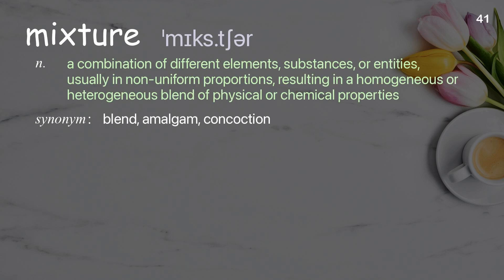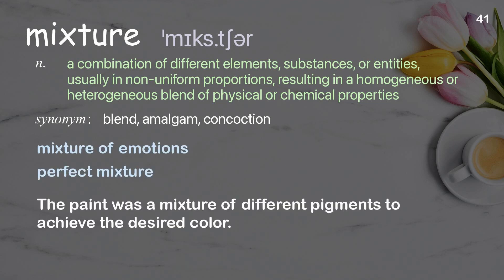Mixture: a combination of different elements, substances, or entities, usually in non-uniform proportions, resulting in a homogeneous or heterogeneous blend of physical or chemical properties. Examples: mixture of emotions, perfect mixture. The paint was a mixture of different pigments to achieve the desired color.